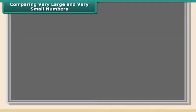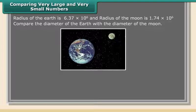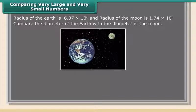Comparing very large and very small numbers. The radius of the Earth is 6.37 × 10⁶ meters and the radius of the Moon is 1.74 × 10⁶ meters. Compare the diameter of the Earth with the diameter of the Moon.